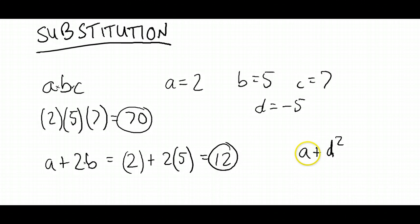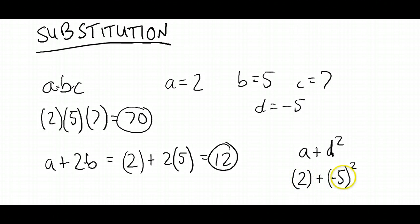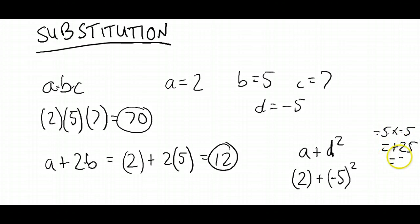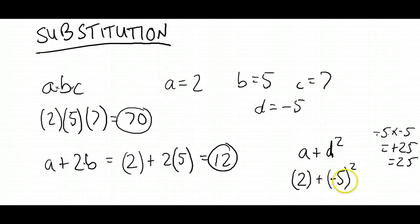All we've got to do is the same thing — follow the rule. We've got A equals 2, so we'll put 2 in place of A, and then plus — now D equals negative 5, and this is where the brackets will help us. We'll put negative 5 in brackets, and whatever D is gets squared. So we've got 2 plus negative 5 squared. Negative 5 squared is negative 5 times negative 5. When you've got a negative times a negative, it becomes positive — 5 times 5 is 25 — so it becomes 25. So we've got 2 plus 25, which equals 27.